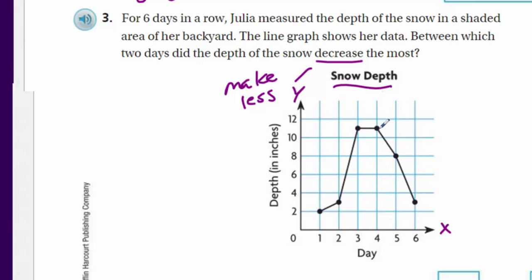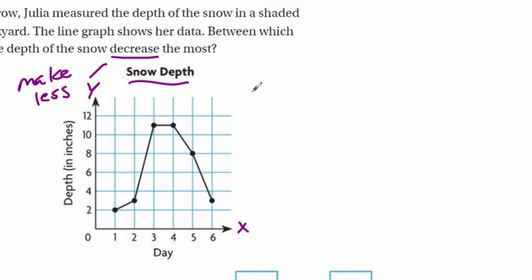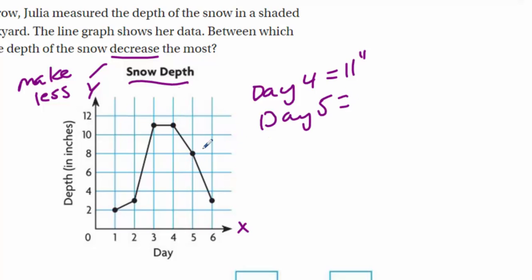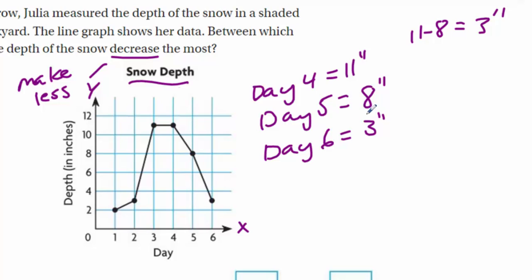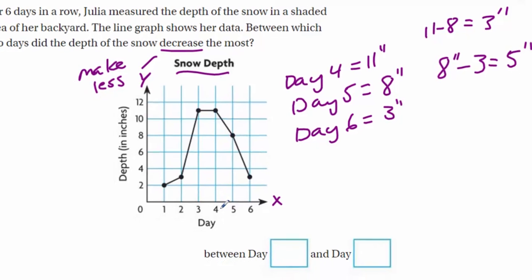Here's our depth on the Y axis, and on our X axis it represents the days. From day one to day two it's increasing — going from about two inches up to three. We need a decrease though. From day three to day four it's basically flat. Now I see a decrease from day four to day five, and another decrease from day five to day six. Day four is eleven inches, day five is eight inches, day six is three inches. The difference from day four to five is three inches, but from day five to six it's five inches — so the largest decrease is between day five and day six.